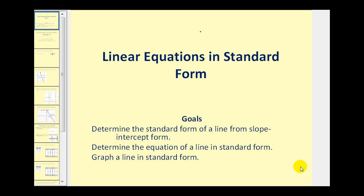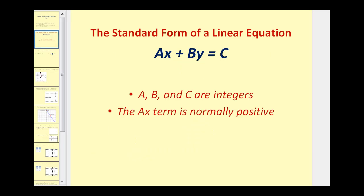Welcome to a lesson on linear equations in standard form. In this video, we'll determine the standard form of a line from slope-intercept form, determine the equation of a line in standard form, and also graph a line in standard form. The standard form of a linear equation is ax plus by equals c, where a, b, and c must be integers, and normally the ax term is positive.